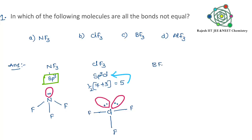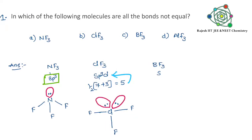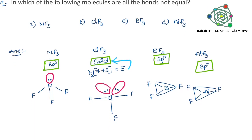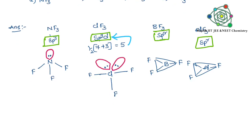Now checking options C and D: BF3 has sp2 hybridization and is trigonal planar. Similarly, AlF3 is also trigonal planar. There is no lone pair in these last two molecules, BF3 and AlF3.